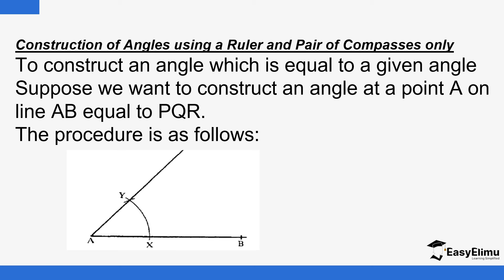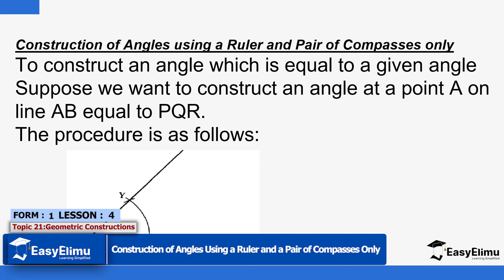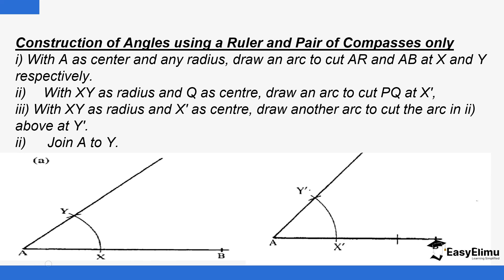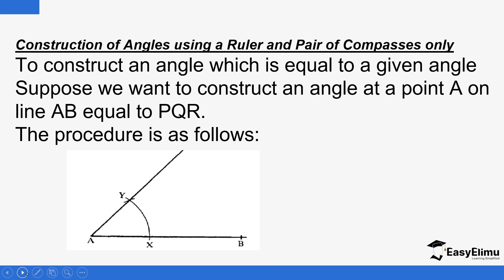When you talk about construction of angles using a ruler and a pair of compasses only, it simply means that when a question is asked in an exam and you are expected to use a ruler and a pair of compasses only, you are not supposed to touch any other material or construction device — maybe like a protractor. The examiner expects you to use only those two items: a ruler and a pair of compasses.